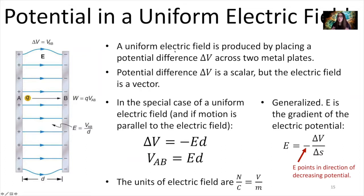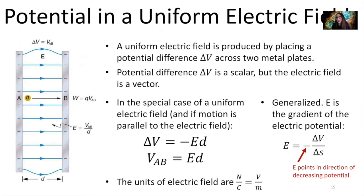A uniform electric field is produced by placing a potential difference across two metal plates. You can get this potential difference by making sure that one plate has a net positive charge and the other plate has a net negative charge. Our potential difference — the change in potential between A and B — is a scalar, so it has a magnitude but no direction. The electric field, however, is a vector, so it points away from positive and toward negative.